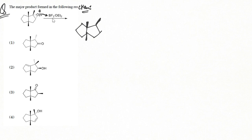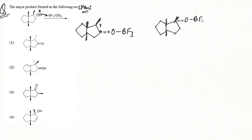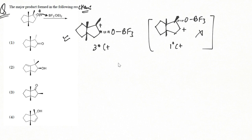When BF₃ accepts the lone pair from oxygen, a positive charge develops on the oxygen. Opening the epoxide from one side places the positive charge on a tertiary carbon, while opening from the other side places it on a primary carbon. The tertiary carbocation is far more stable than the primary one, so we proceed with the tertiary carbocation intermediate and discard the less stable pathway.